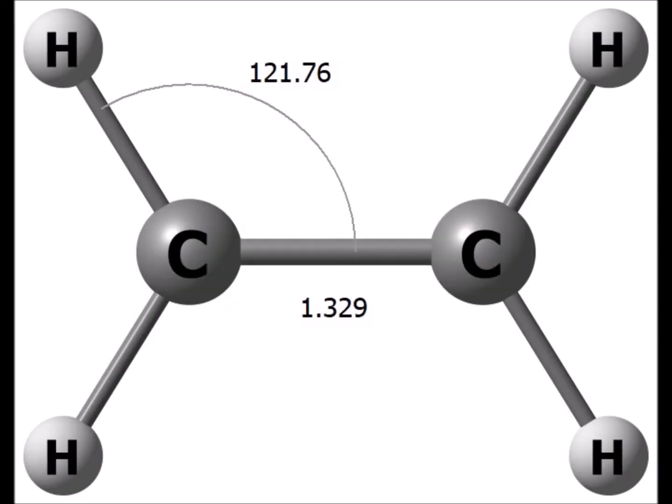Here we see a calculation of ethylene. Each of the carbons is sp² hybridized, so each carbon bonds to the two hydrogens and the neighboring carbon through this triplet of sp² hybrids. The second part of the carbon-carbon double bond is formed from the unhybridized 2pz orbitals on each carbon atom.